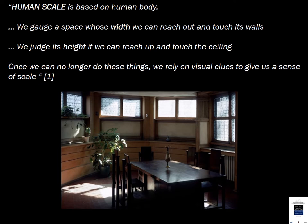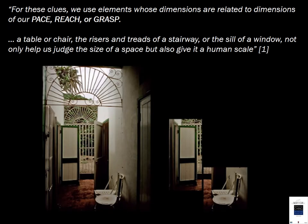Human scale is based on the human body — we gauge a space whose width we can reach out and touch its walls, or judge its height if we can reach up and touch the ceiling. This is Frank Lloyd Wright's dining room at his home and studio in Oak Park, Illinois, outside of Chicago. For scale clues, we use elements whose dimensions are related to our pace, reach, or grasp — such as a table or chair, the risers and treads of a stairway, or the sill of a window.